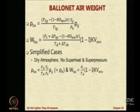Similarly, W_BA or the weight of the air in the ballonet will be, this term will again go away and this will become P_S, this will become T_A. So, it is just (1 minus I) into K V_env. By these two simple expressions you can get the values for your condition of dry atmosphere and super heat and super pressure neglected.